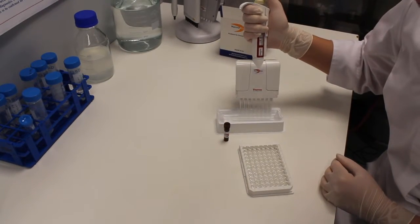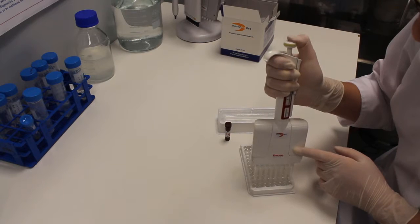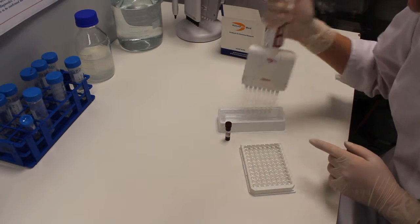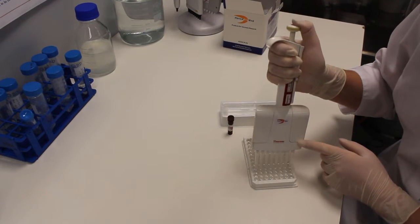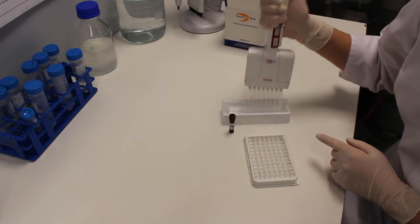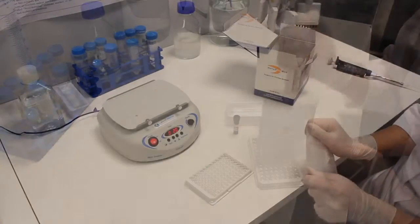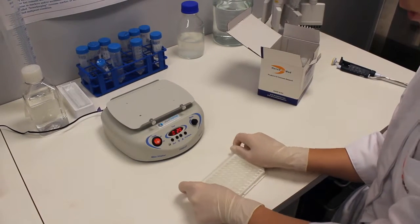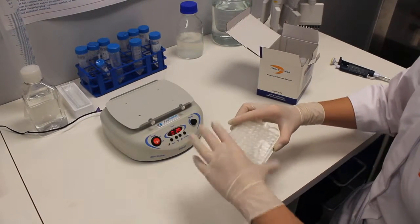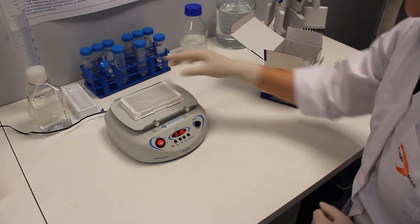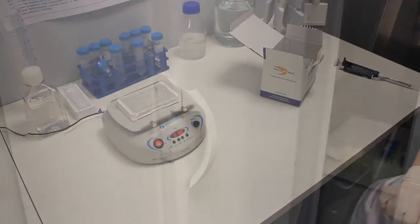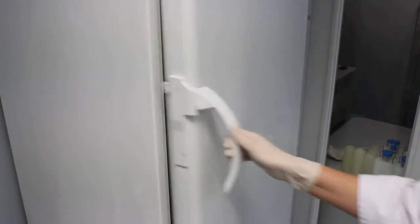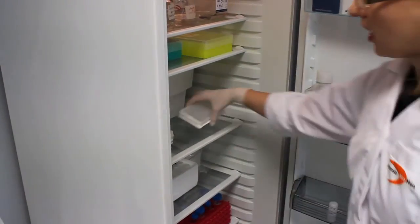Add 100 microliters of diluted secondary antibodies into each well and incubate at room temperature while shaking for 20 minutes. Then incubate at plus 4 degrees for 1 hour.